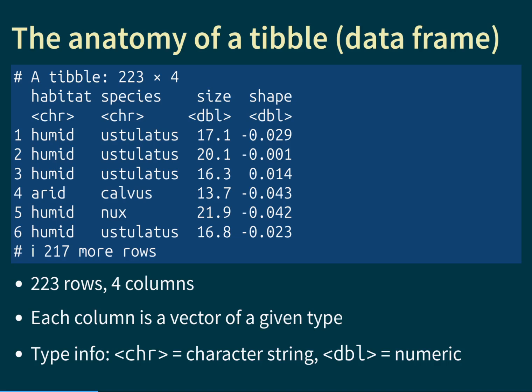The types of those columns are written right underneath the column names. You can see CHR written under habitat and species, and DBL under size and shape. CHR stands for character string, whereas DBL stands for double precision numerical value — which is just a historically contrived way of saying it's a number. There are other types columns can have; for example, LGL stands for logical.